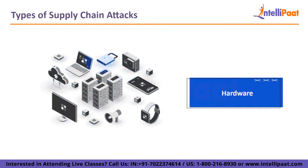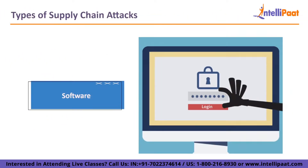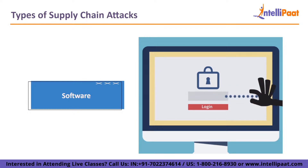Hardware: Similar to the USB keylogger previously stated, hardware attacks rely on an actual physical object. To maximize their impact and harm, attackers will aim for a device that travels through the entire supply chain. Software: One compromised application or piece of software is all that is needed for a software supply chain assault to spread malware throughout the whole network. Attackers frequently aim for the source code of an application to introduce malicious code into a reliable program or computer system.